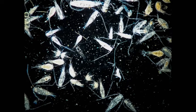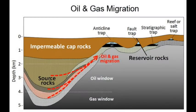Also submerged under thousands of feet of sediments were the many dead plants and animals that proliferate in the shallow seas. Over time, the pressure and temperature cooked the dead carbon matter buried in the deep marine shales into oil and gas, which migrated into the adjacent sandstones, filling up the pore spaces and pushing out some of the seawater that was there to start with.